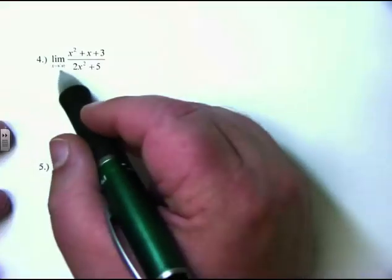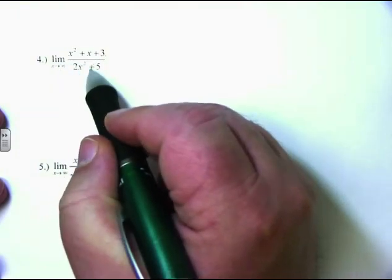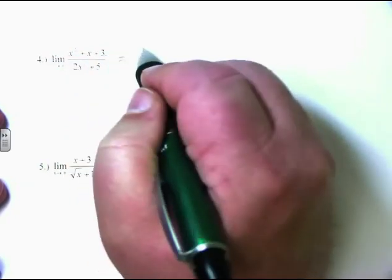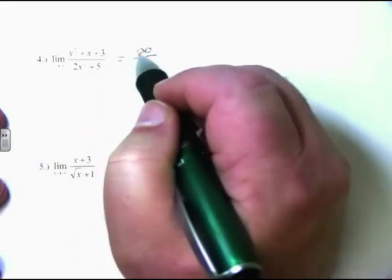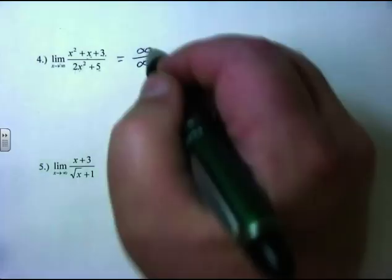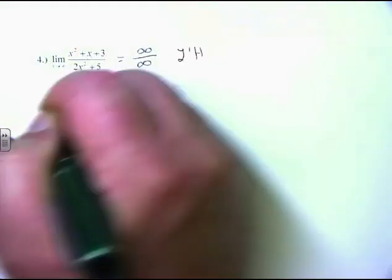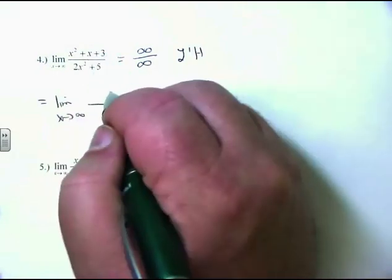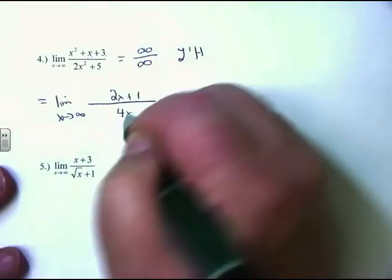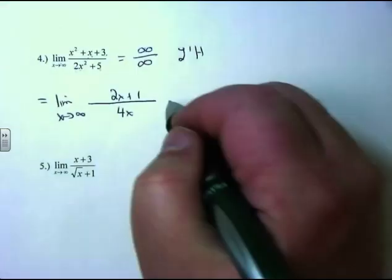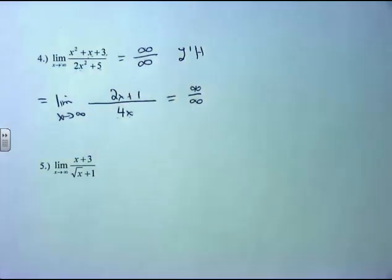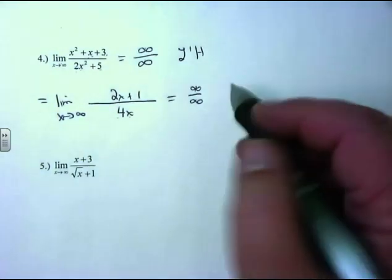These next problems involve the limit as x approaches infinity. Take the limit as x approaches ∞ of (x² + x + 3)/(2x² + 5). Plugging in ∞ gives ∞/∞, so we apply L'Hôpital's rule. Derivative of x² + x + 3 is 2x + 1; derivative of 2x² + 5 is 4x. Plugging in ∞ again gives ∞/∞ — that's okay, we can apply L'Hôpital's rule again.